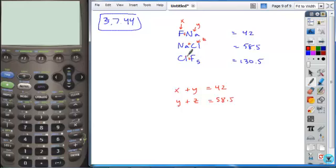Looking at my last example, the chlorine is Z plus how many fluorides are there? The subscript of five means there's five of those, so 5X, and that equals 130.